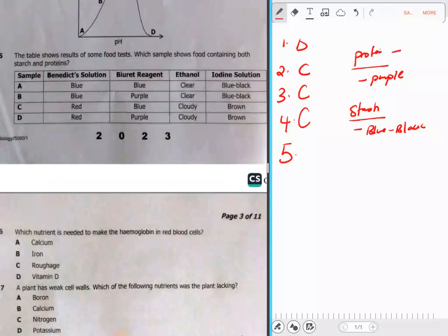That's our question 5. When you go to question A, solution A has got blue, blue, clear, blue-black. Now Benedict solution is not used to test for proteins. Benedict solution is used to test for reducing sugars. Now when we go to B, blue means not present. For purple means it's present, even for this one it's present. But blue means not present.